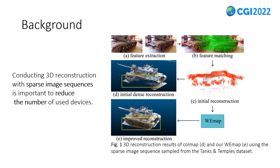The basic steps for 3D reconstruction include feature extraction, feature matching, camera pose estimation, sparse point cloud reconstruction, and point cloud densification. Previously, research focused on the development of each step, assuming that a dense image sequence can be easily captured by mobile devices for 3D reconstruction. One open-source monocular 3D reconstruction method, CoreMAP, is the most popular method currently available, with the highest accuracy on dense image sequences.